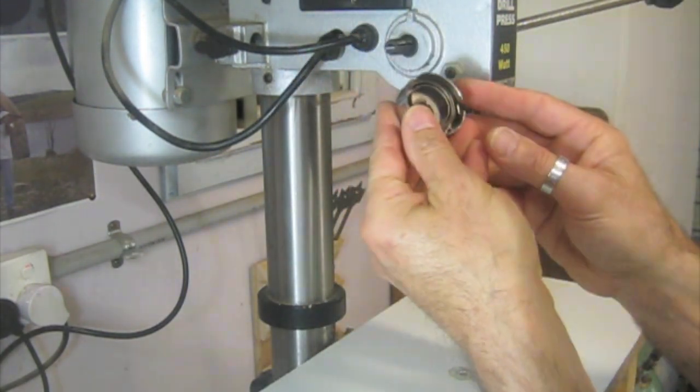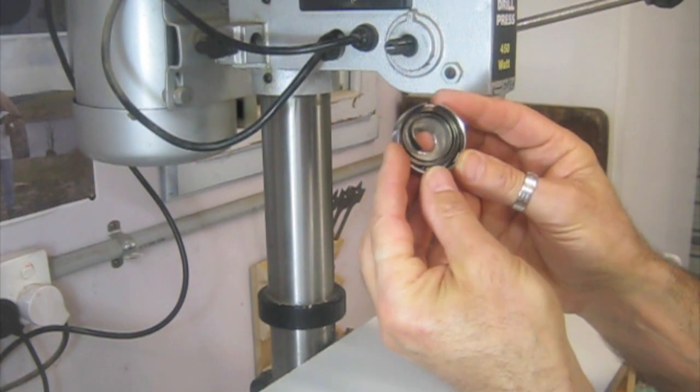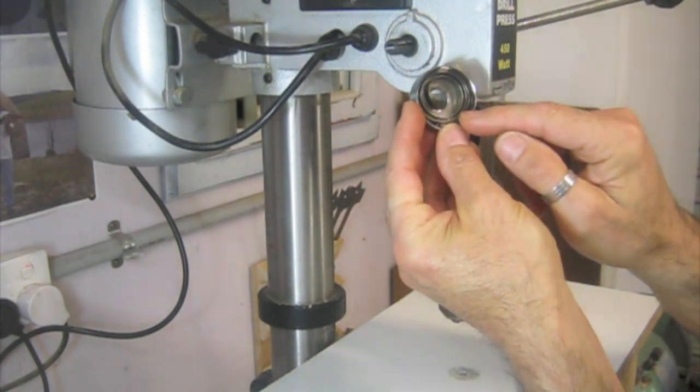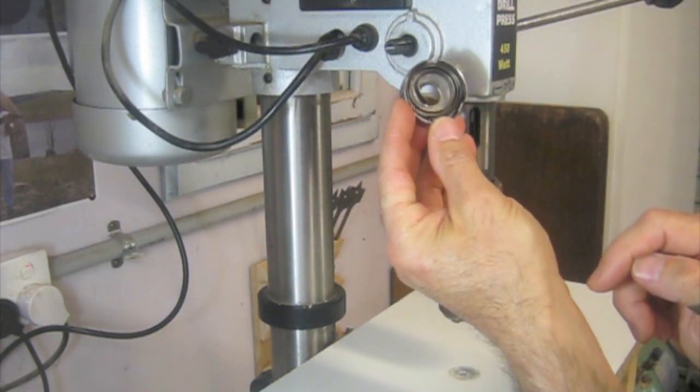And that bit just there just comes off, a little cover, and inside that cover is the return spring, or another name for it is a quill spring.